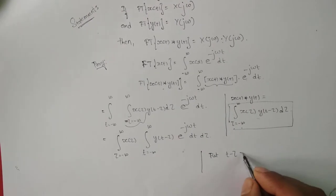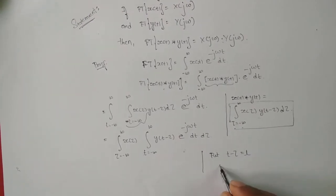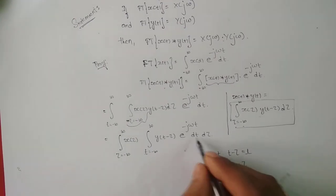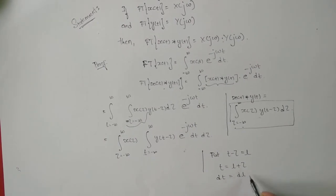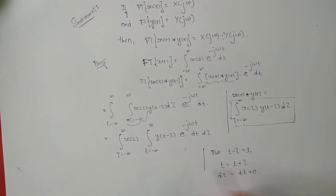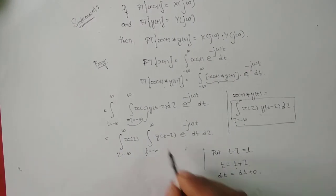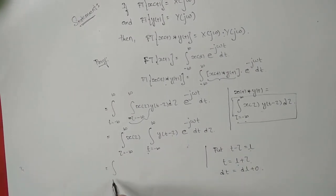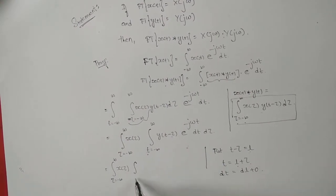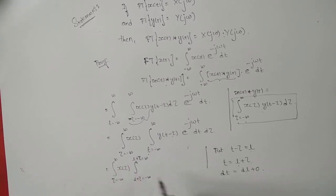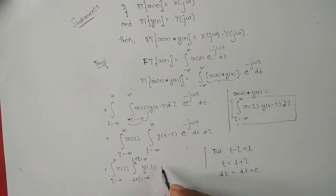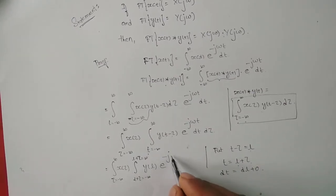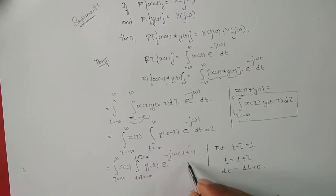Now I replace t − τ with a dummy variable l, so t = l + τ, and differentiating gives dt = dl since τ is constant. So instead of t I substitute l + τ, and instead of t − τ I substitute l. This gives: integrating τ from minus infinity to infinity of x(τ), times the inner integral: integrating l from minus infinity to infinity of y(l) · e to the power minus jω(l + τ) dl dτ.